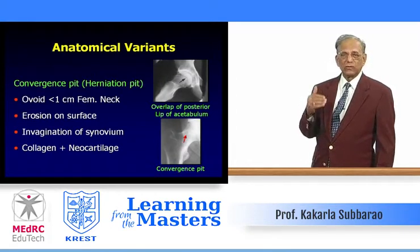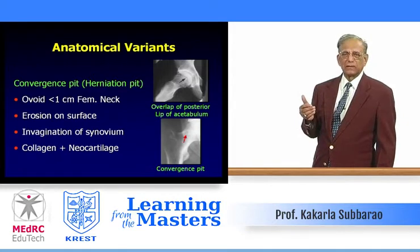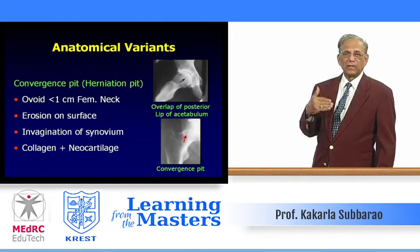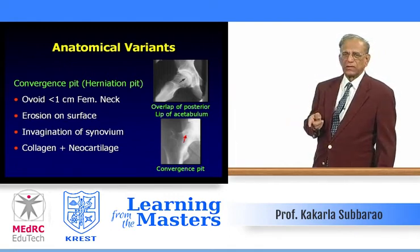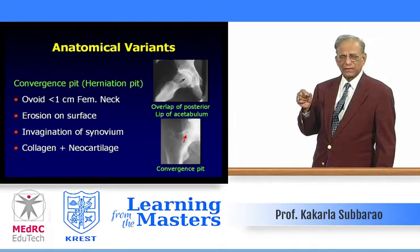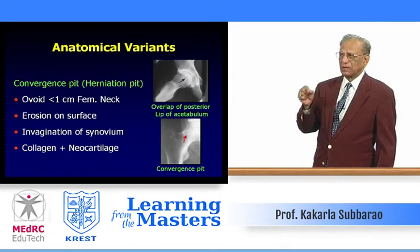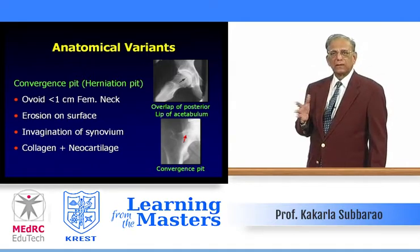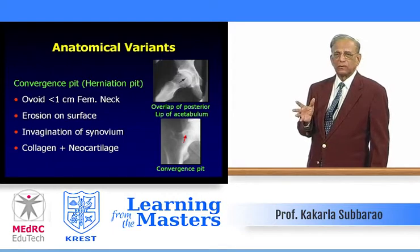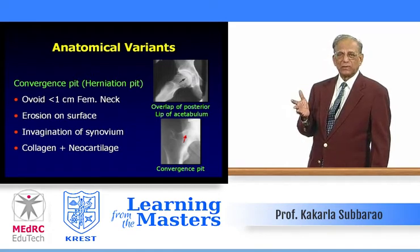First of all, whenever you are talking about any pathology of the skeleton, you have to know what the normal variants are. Otherwise, a normal variant may be diagnosed as pathological, putting the patient at a disadvantage. For example, the overlap of the posterior lip of the acetabulum may appear as if there is a fracture on the head and neck of the hip.